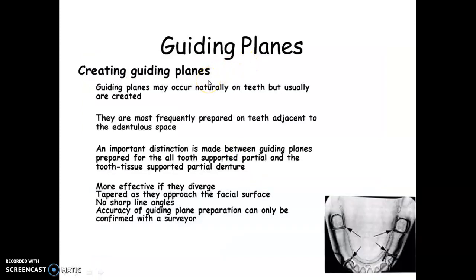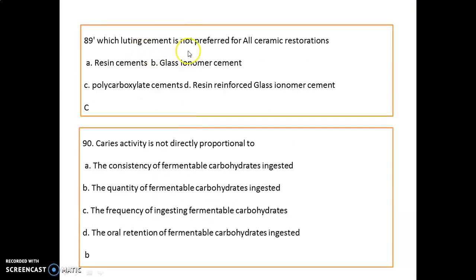Guide planes may occur naturally on teeth but usually are created. They are most frequently prepared on teeth adjacent to the edentulous spaces. An important distinction is made between the guiding plane prepared for all tooth-supported partial dentures and tooth-tissue supported partial dentures. They are most effective if they diverge and taper as they approach the facial surface. In guide planes, no sharp angles, and accuracy is always confirmed with the surveyor.